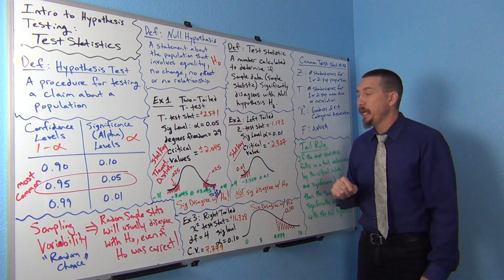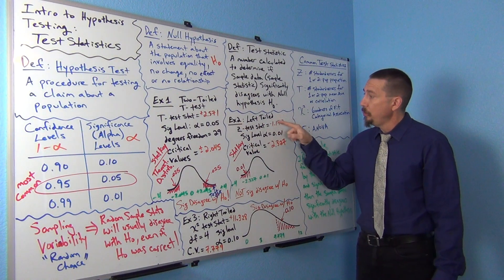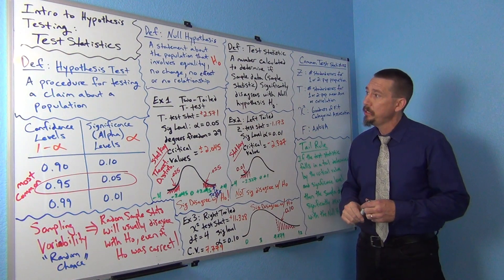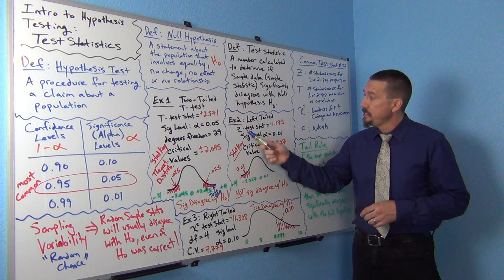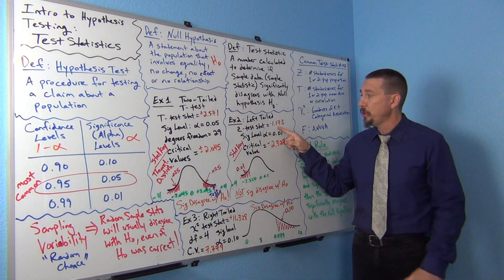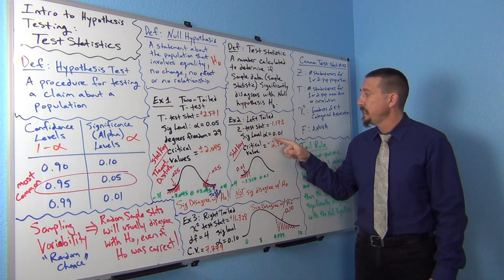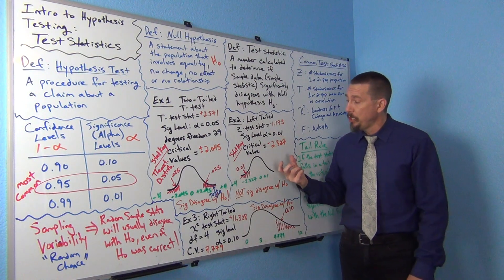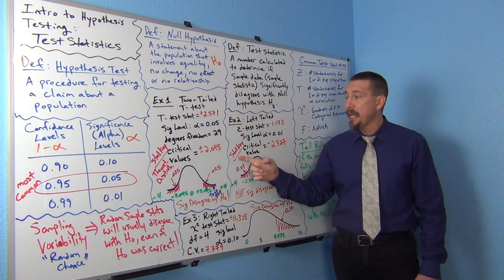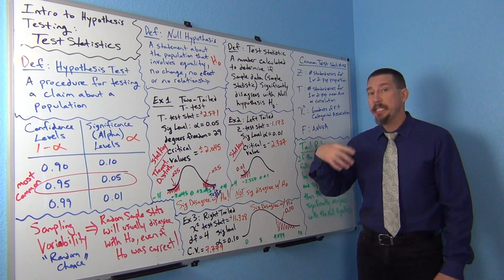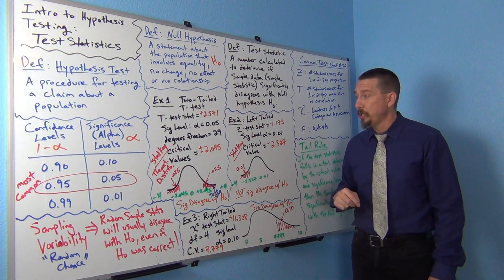Now we have example two. We have a left-tailed test with a z-score, so this is probably some kind of proportion test or a percentage test. We're looking at a z-score test statistic of negative 1.173. We're doing a significance level of 0.01, or alpha equals 0.01, or 1%. I can look up the critical value on StatKey under theoretical distributions normal, just like we did in the last unit when we looked up critical values.